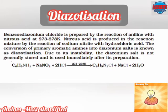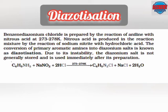Benzene diazonium chloride is prepared by the reaction of aniline with nitrous acid at 273-278 Kelvin. The conversion of primary aromatic amines to diazonium salts is known as diazotization. In this reaction, benzene amine or aniline combines with sodium nitrate and hydrochloric acid at 273-278 Kelvin to form benzene diazonium chloride, sodium chloride and water.